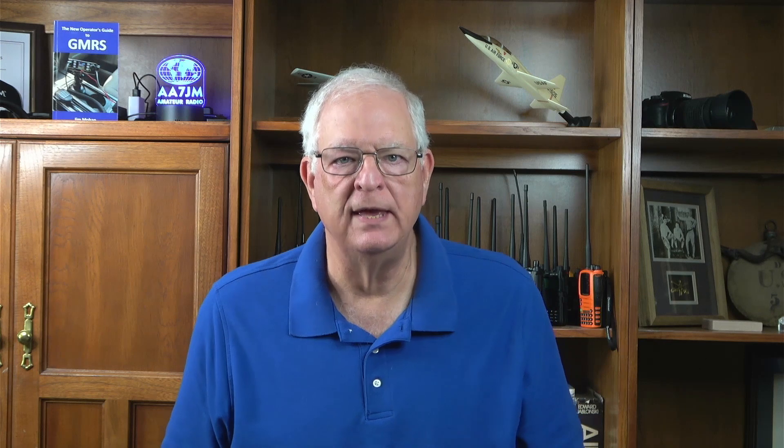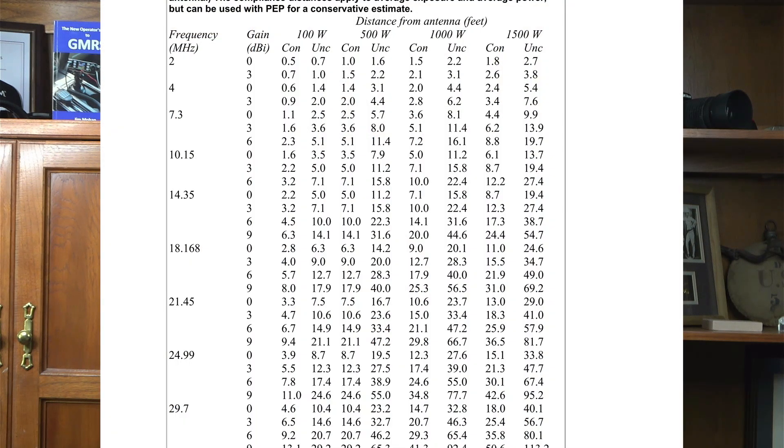There are a couple of ways to do your station evaluation. The first and easiest is to use Table 4, listed under the heading 'Tables Based on Antenna Gain' on the ARRL Station Evaluation page. In this table, you simply find the frequency, an antenna gain figure at or higher than your antenna, and the power level you intend to use. You'll see the controlled and uncontrolled distance at which MPE falls below the danger limit. If you print the table and highlight the distances for each band and power level you use, and the closest anyone can get to your antenna is greater than those numbers, your station has passed. File the page away with your other radio documents and you're good to go.